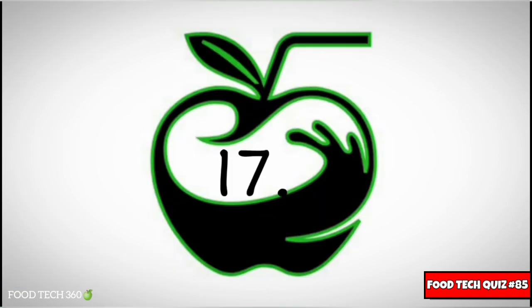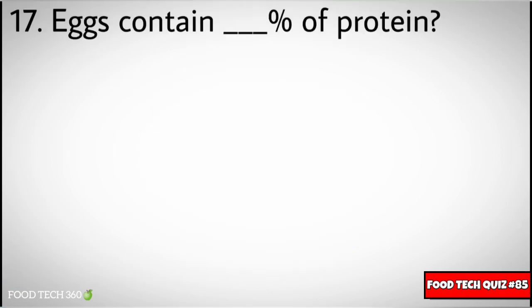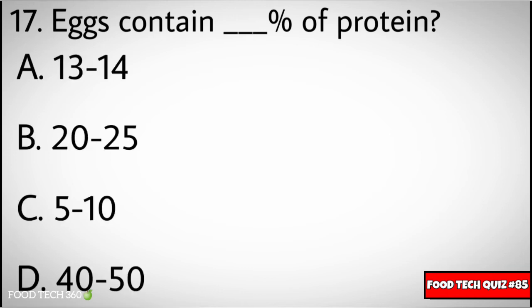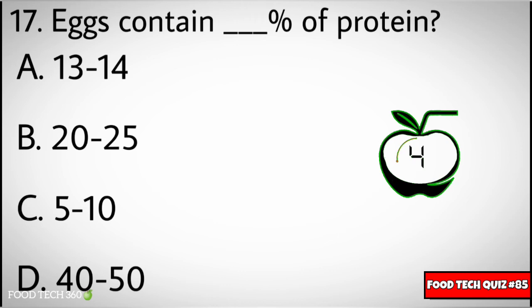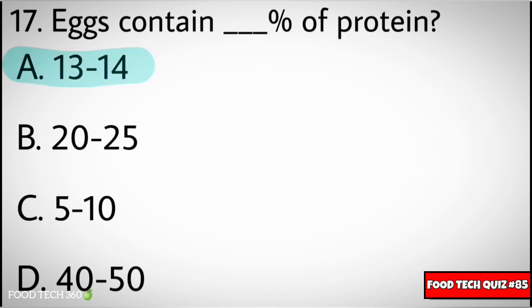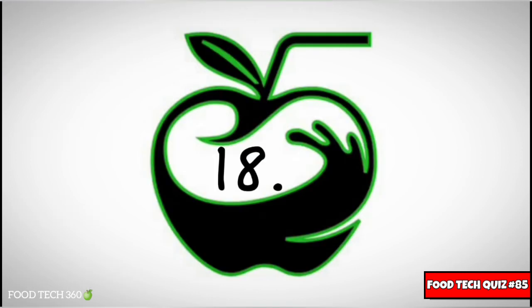Question number seventeen: eggs contain what percentage of protein. Options: A) 13 to 14%, B) 20 to 25%, C) 5 to 10%, D) 40 to 50%. Correct answer: A) 13 to 14%.